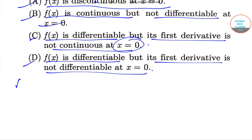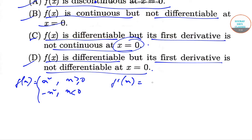It has been given that f(x) = x² when x ≥ 0, and f(x) = −x² when x < 0. If we try to find f'(x), this will be equal to 2x when x ≥ 0, and −2x when x < 0.